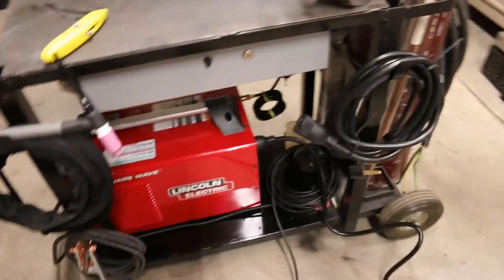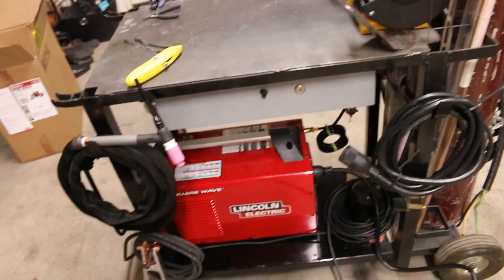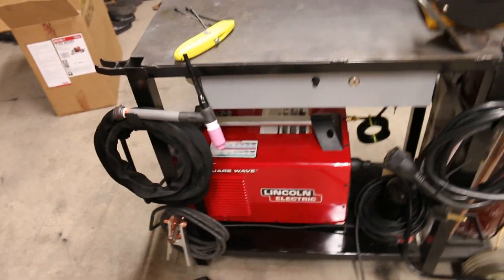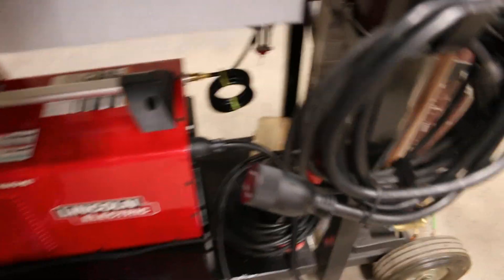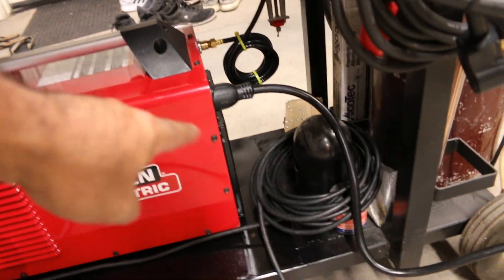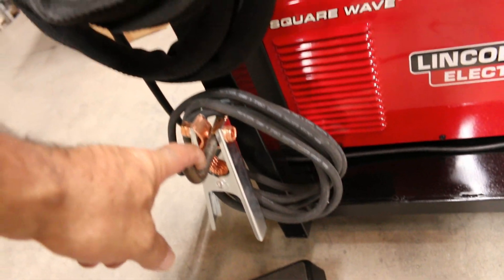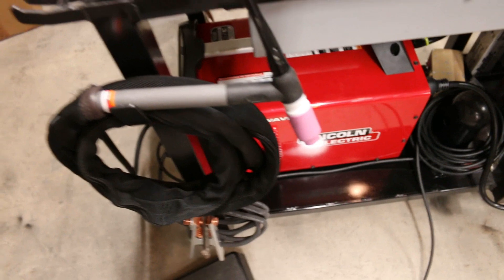So here we are, all set up on my torch cart, my TIG cart. I got my 220 here, got my stinger right there, there's the 110 plugged in. That coil over there is for the foot controller. Here's my ground, and I've got my ground on the cart. What I do is I throw my work up here and it's automatically grounded because the whole cart is grounded.